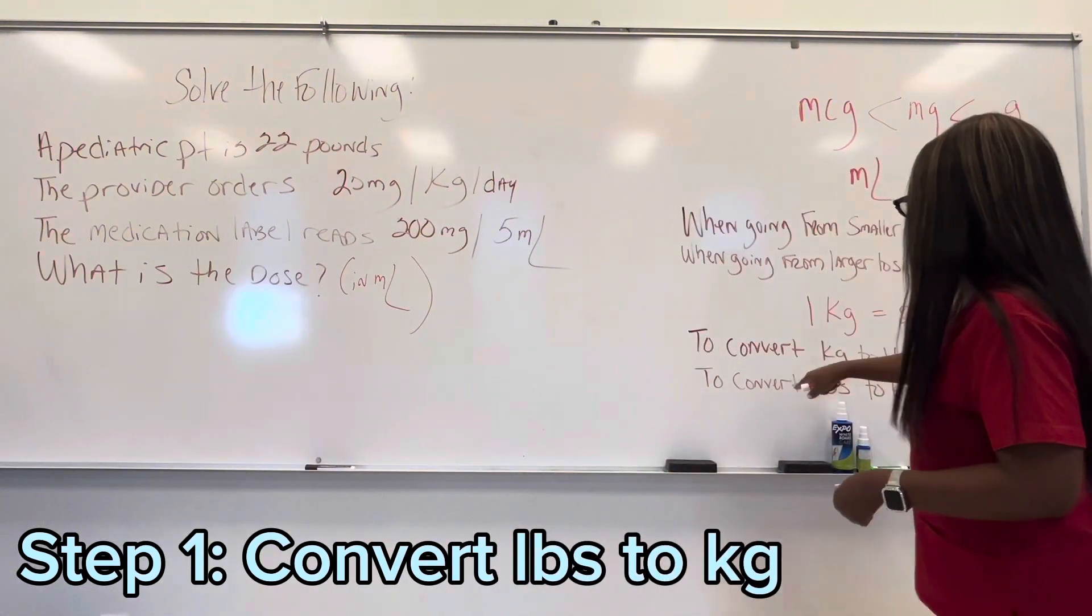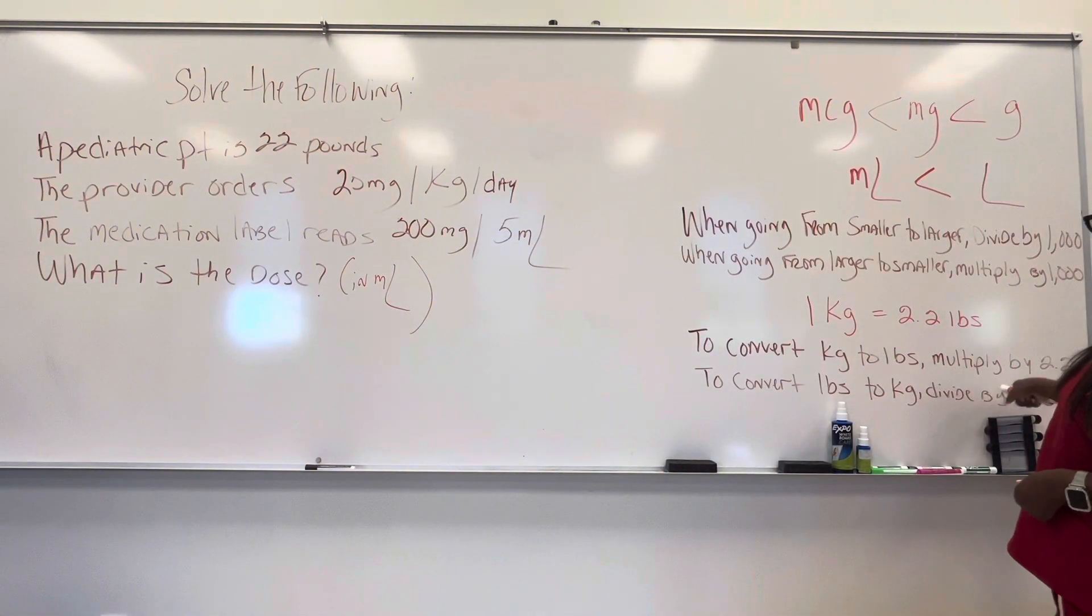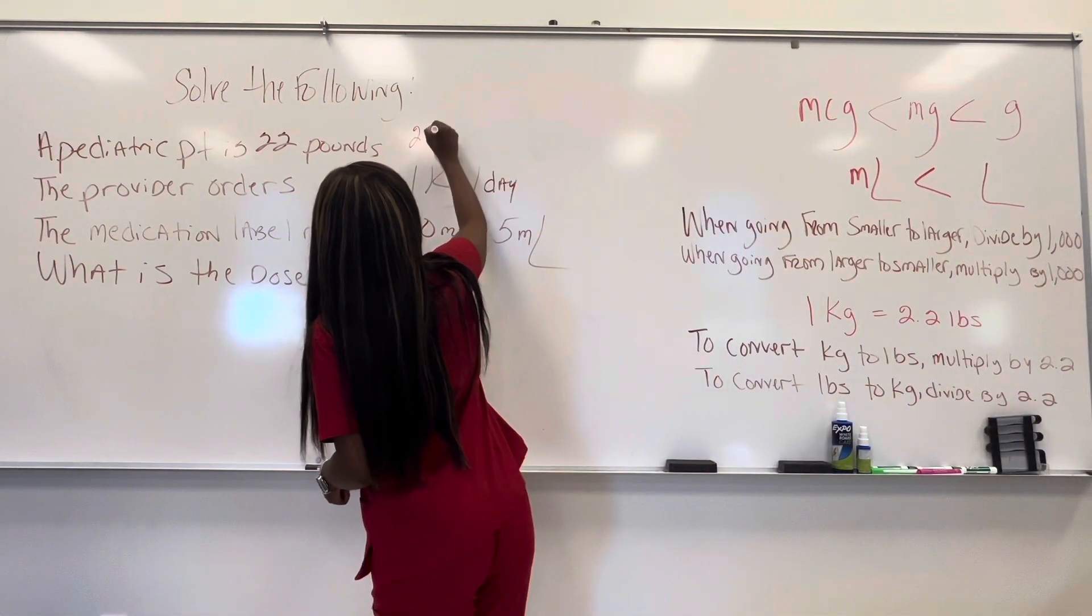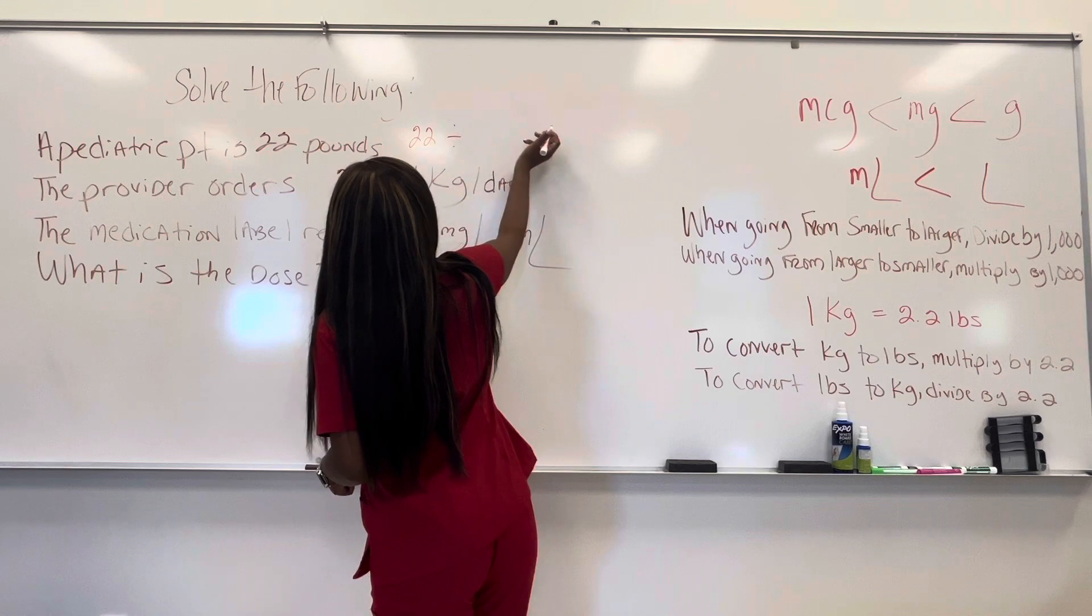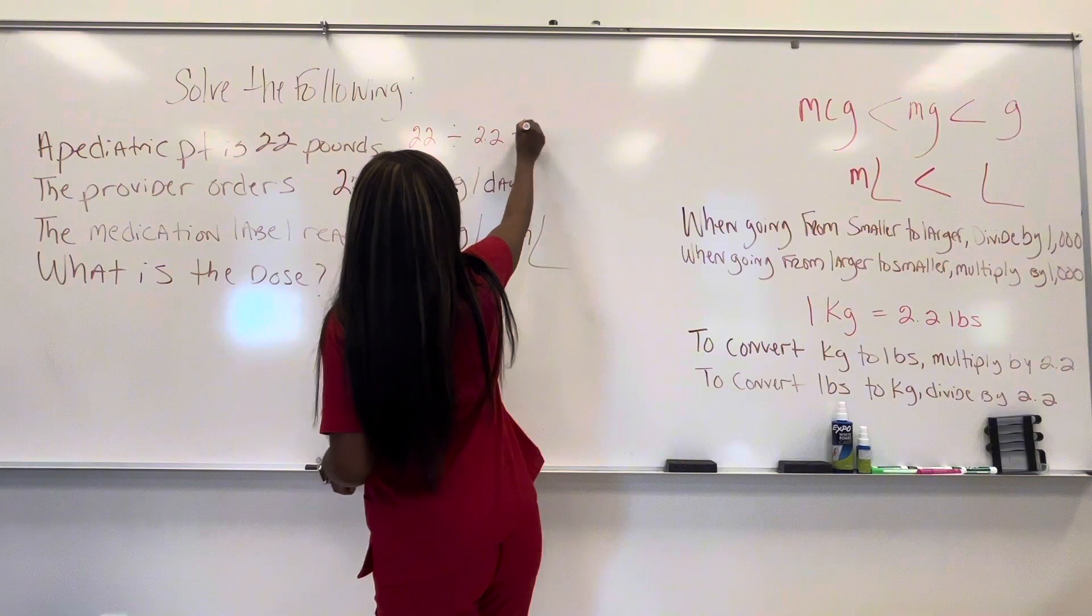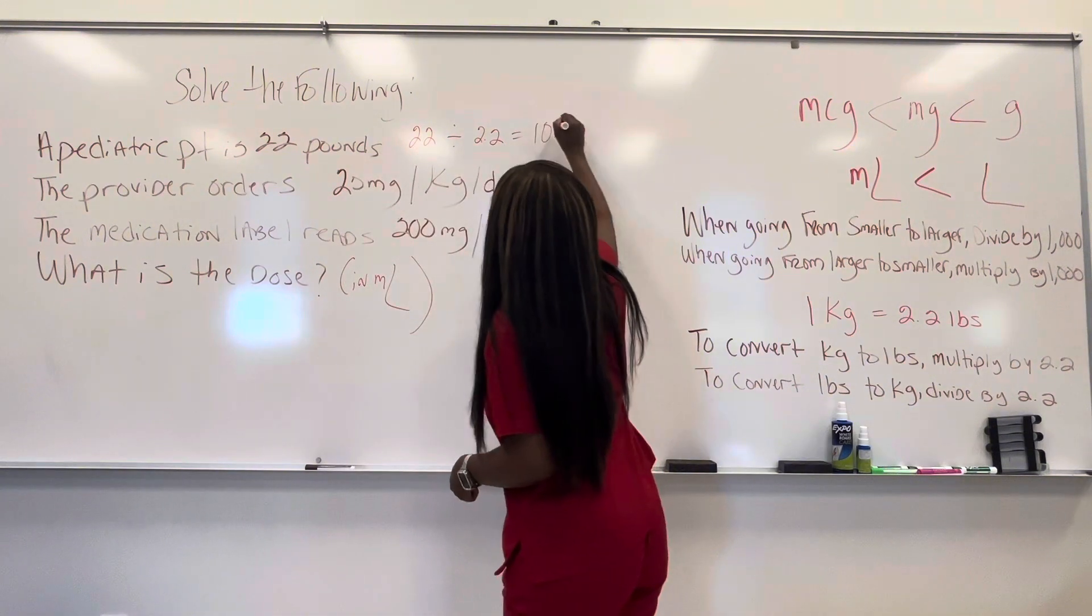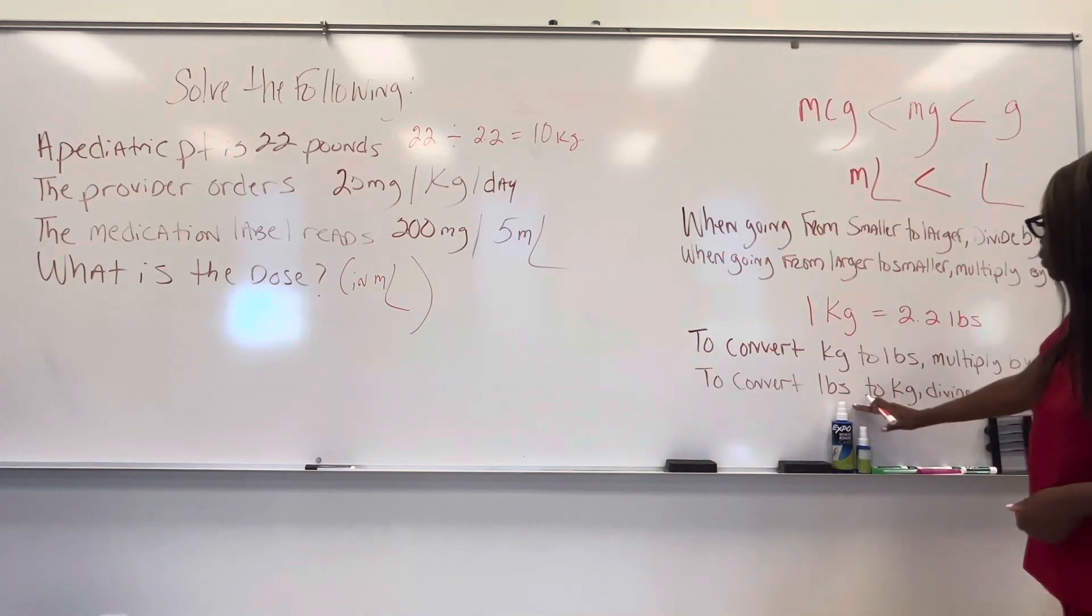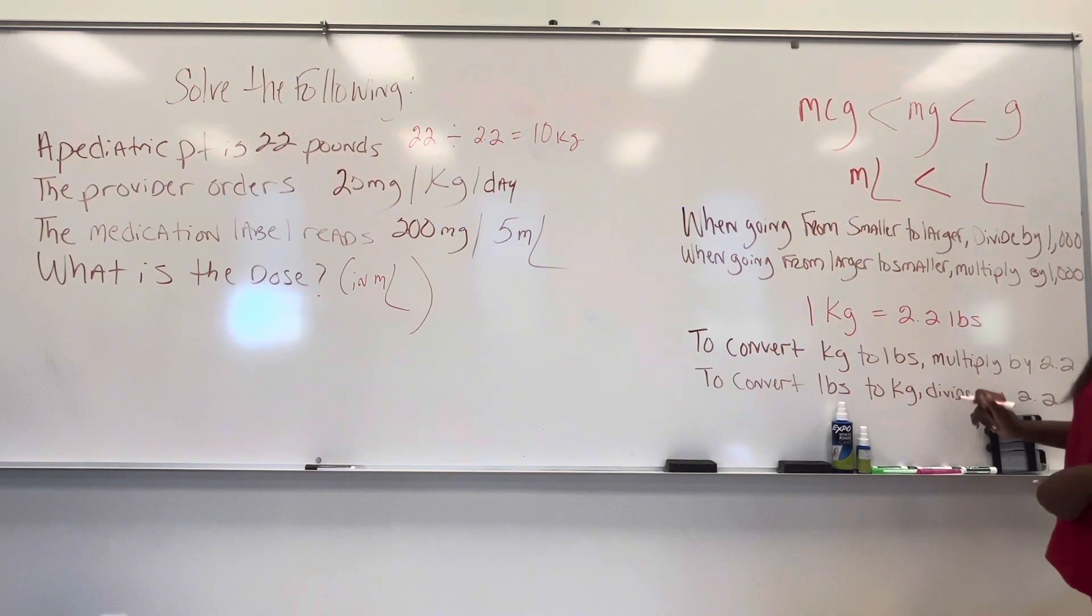To convert 22 pounds to kilograms, we got to divide by 2.2. So 22 divided by 2.2 is going to give us what? 10. So that's going to be 10 kilograms. How do we know that? Because when we're converting pounds to kilograms, we got to divide by 2.2. So that's going to give us 10.